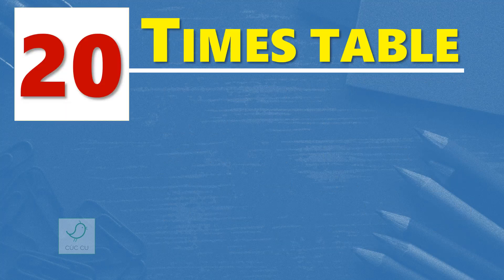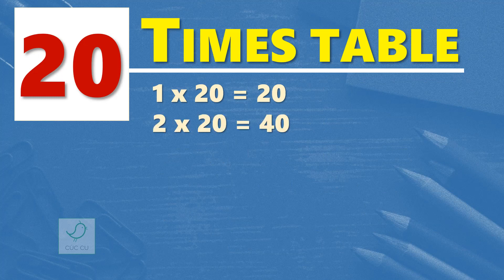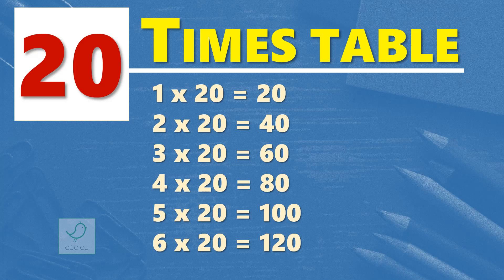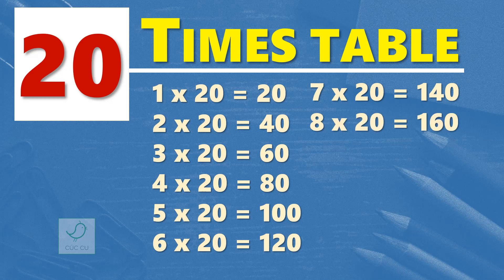20 times table. 1 times 20 is 20. 2 times 20 are 40. 3 times 20 are 60. 4 times 20 are 80. 8 times 20 are 160. 9 times 20 are 180. 10 times 20 are 200.